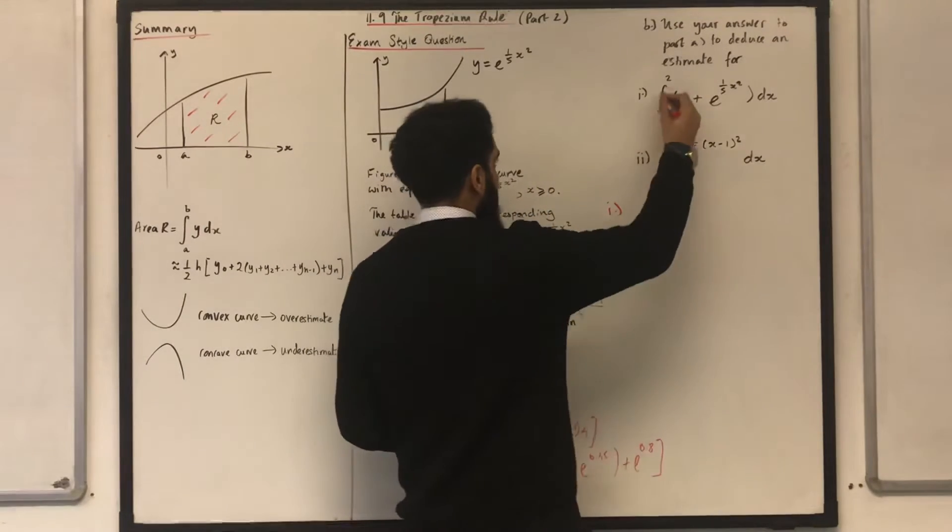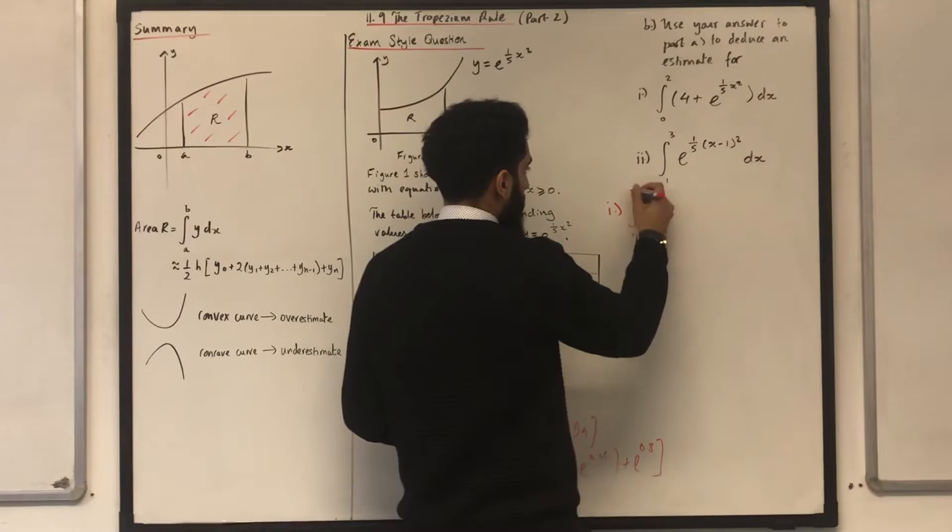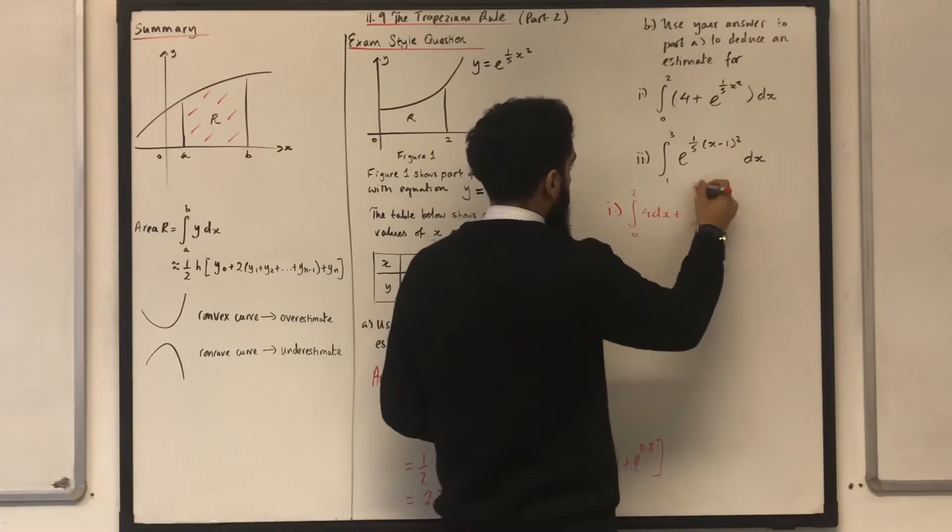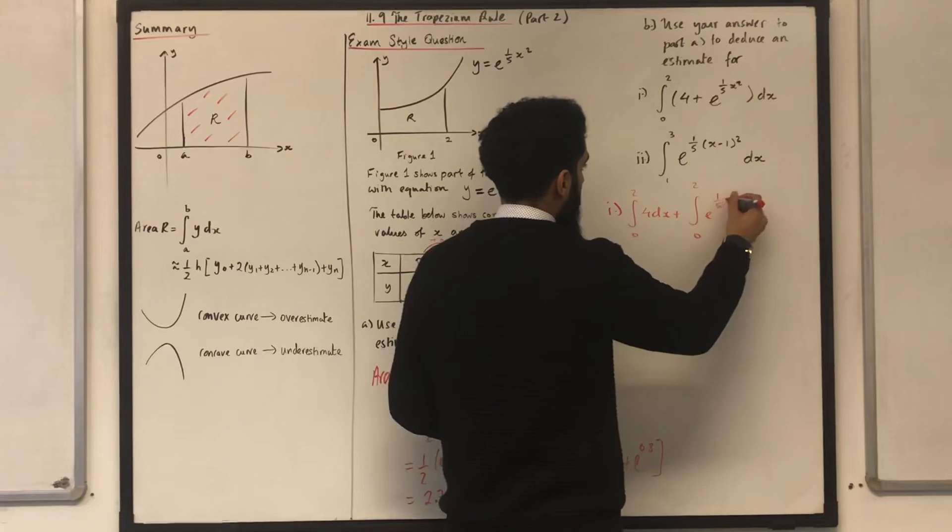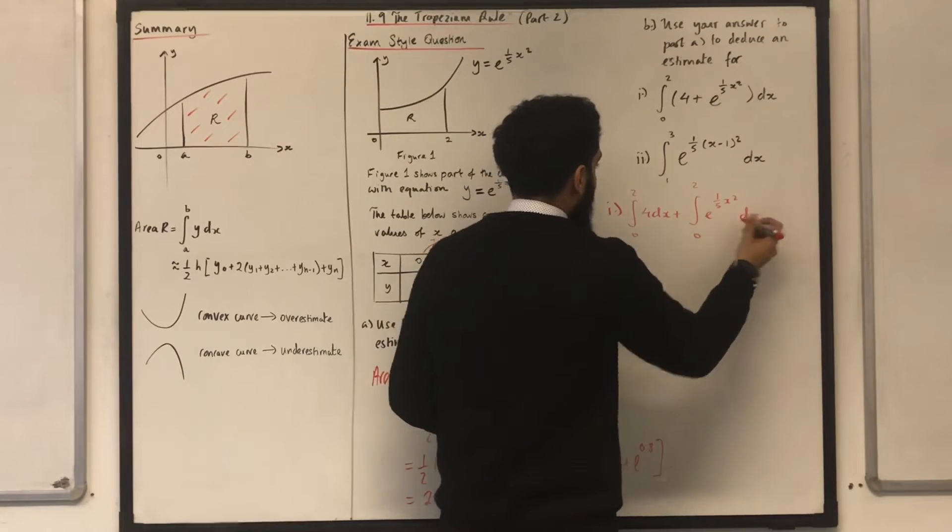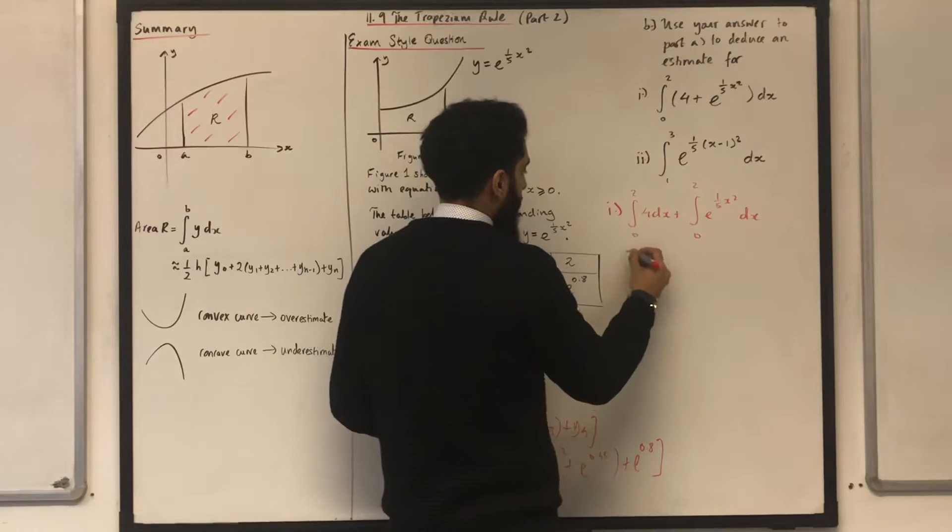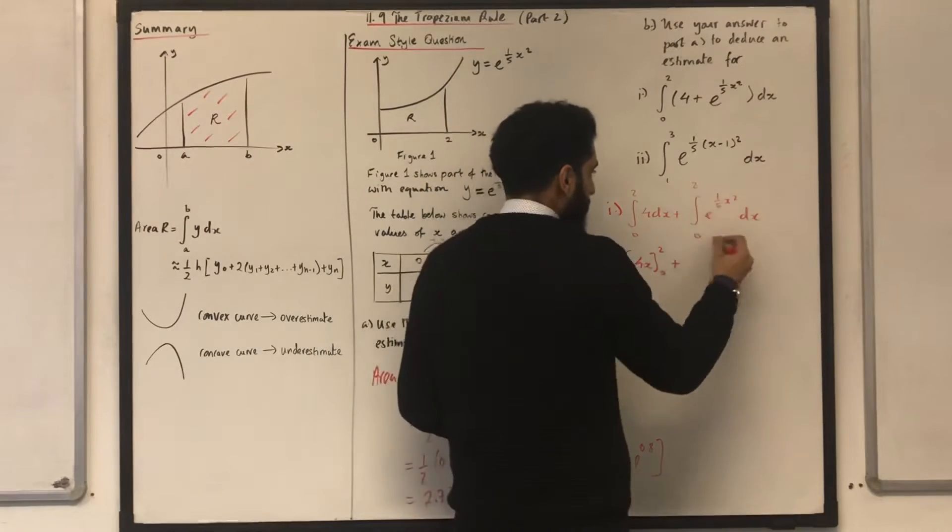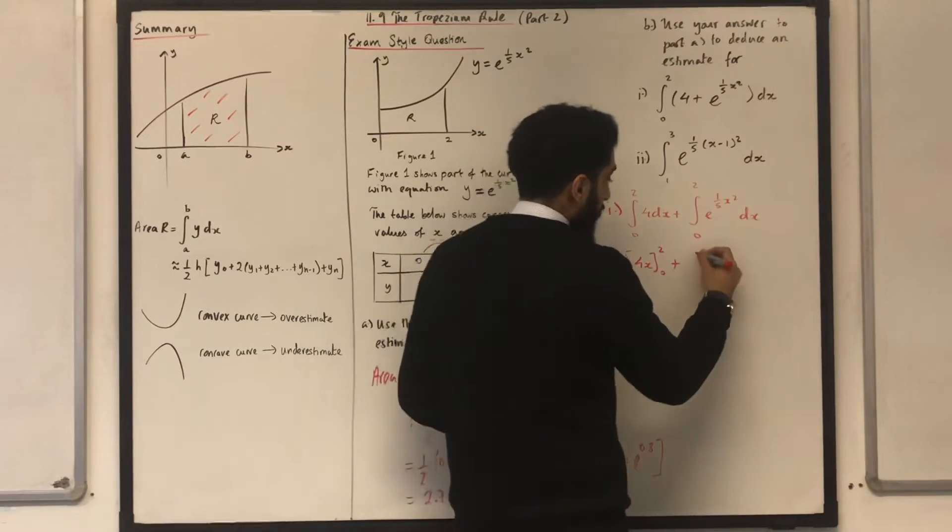Firstly, we can split this integral into two parts. Plus the integral from 0 to 2, 4dx, plus the integral from 0 to 2, e to the power 1 over 5, x squared, dx. This definite integral is just 4x, in square brackets, 0 to 2. Plus the estimation of this integral from part A was 2.73.